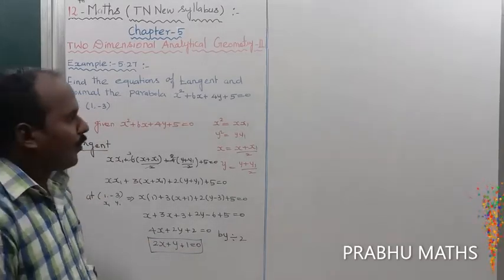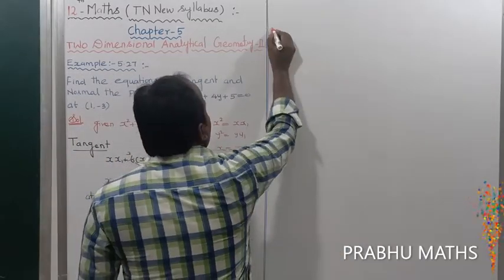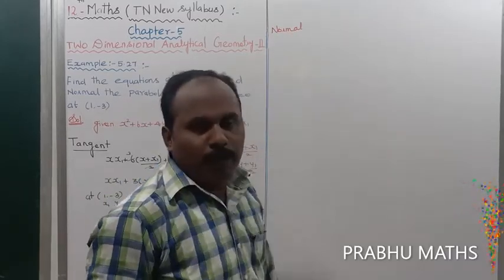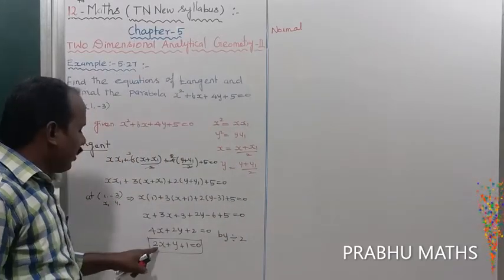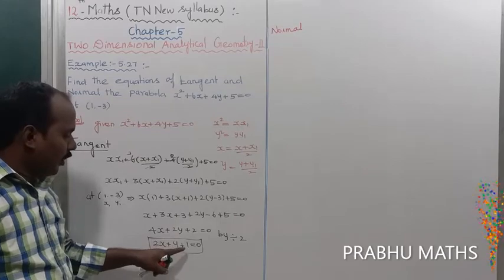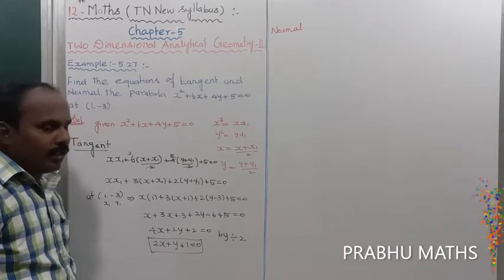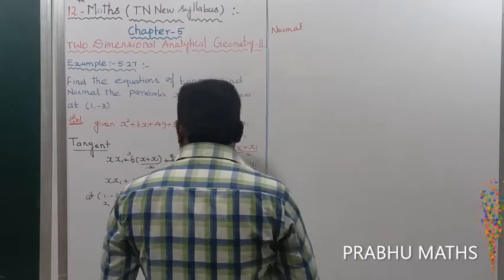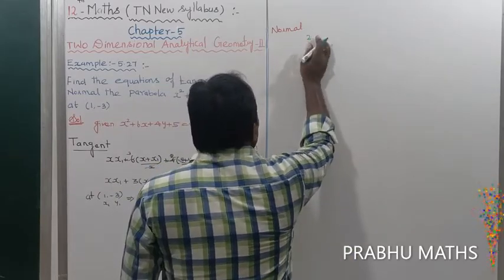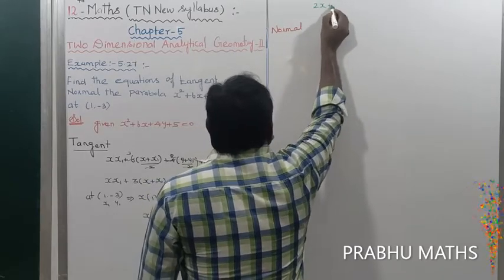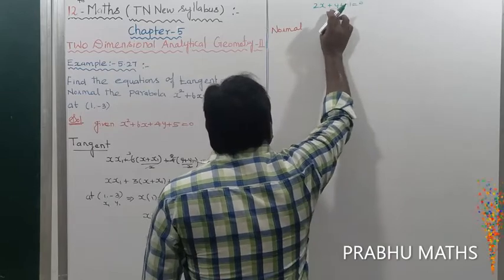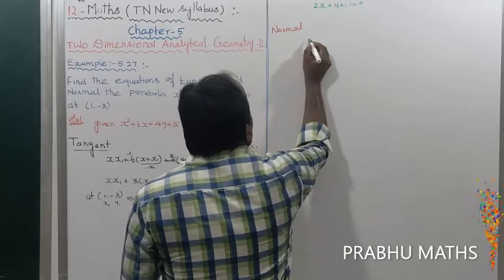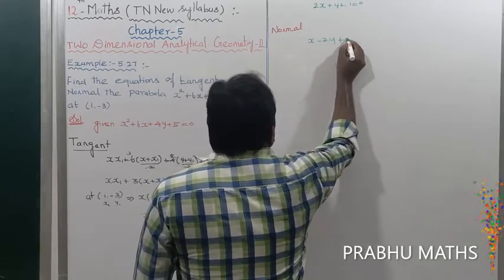Next, find the normal equation. The normal is perpendicular to the tangent. The tangent equation is 2x + y + 1 = 0. For the normal, swap the coefficients: the coefficient of x becomes the multiplier of y, and the coefficient of y becomes the multiplier of x, giving x - 2y + k = 0.